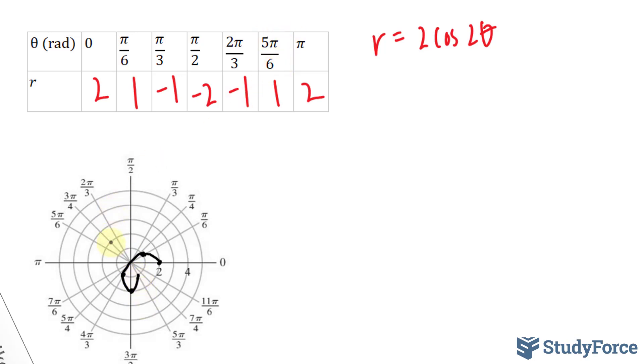5 pi over 6 is right here, and it's positive 1. And pi is at radius of 2. Connecting these.